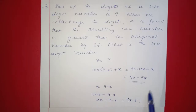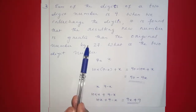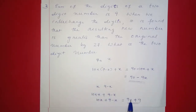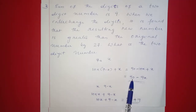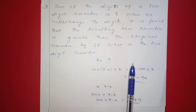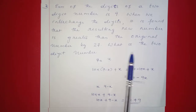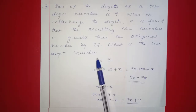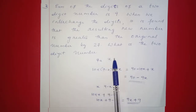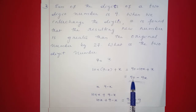The original number is 90 minus 9x and the new interchanged number is 9x plus 9. The resulting new number is greater than the original number by 27, so we set up the equation: new number minus original number equals 27.